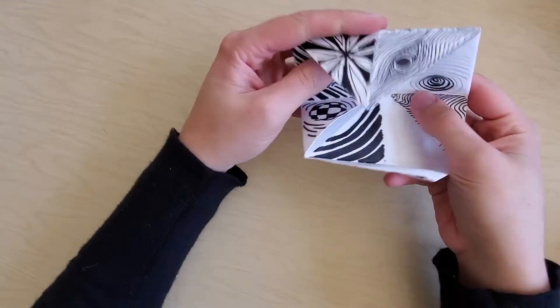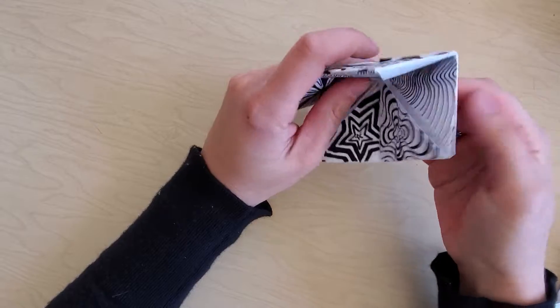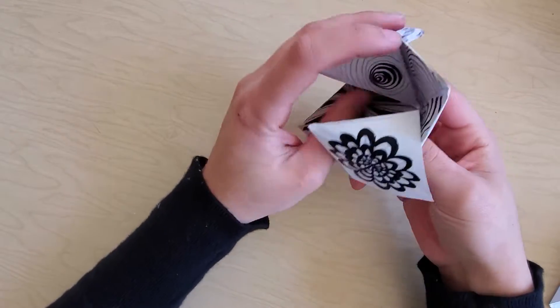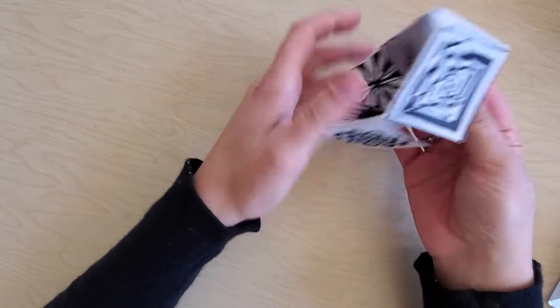I'm going to explain where you're going to draw inside of your fortune teller because that can be confusing. So your fortune teller is like this.